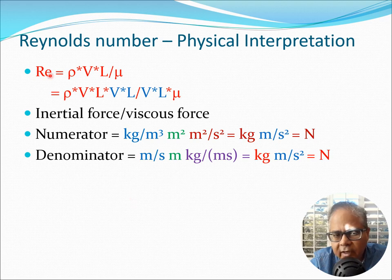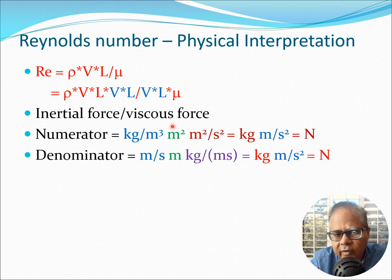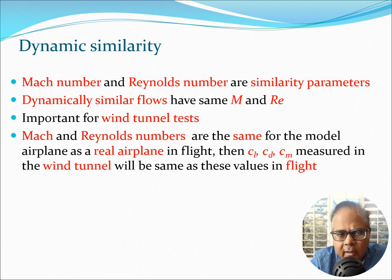The top part is the inertial part and the bottom part is the viscous part. This tells us that if the Reynolds number is very high, the inertial force is much greater than the viscous force. For relatively large aircraft flying very rapidly, the Reynolds number is typically in the millions. However, for something very small such as a fruit fly, a mosquito, or a micro air vehicle, the velocity and length are less and viscous forces tend to dominate, so the Reynolds number is much smaller. Reynolds number is therefore an important parameter that tells us how important viscous effects are.